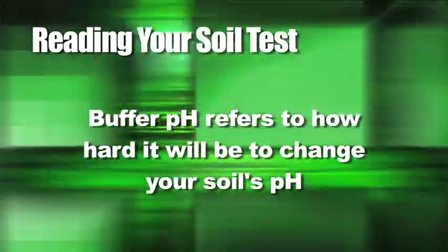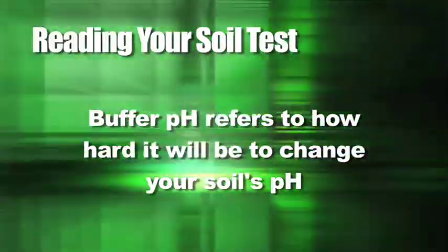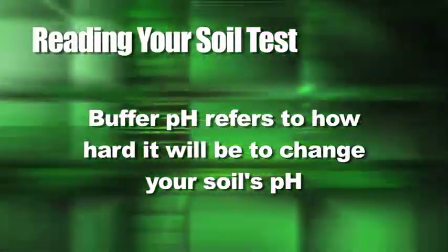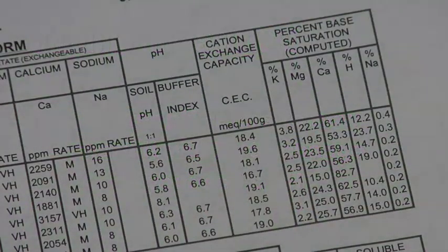Soil pH is definitely the most important thing to look at. One more thing: you may notice a buffer pH on your soil test. Generally, buffer pH tells you how difficult it's going to be to change the soil pH — that's really something for the lab guys to worry about, not necessarily you. When you see that buffer pH, what it's really telling you is how much lime you're going to need in low pH situations. Let the lab tell you how much lime it's going to take.